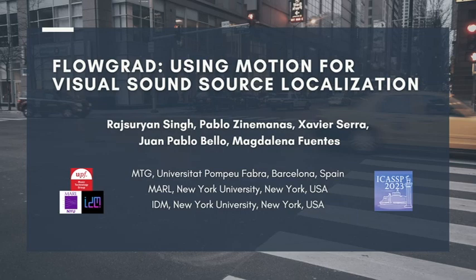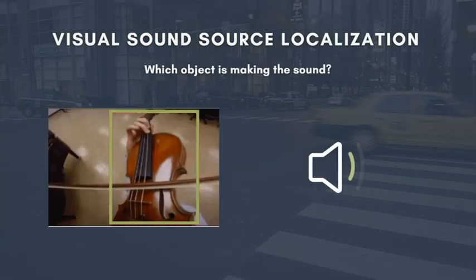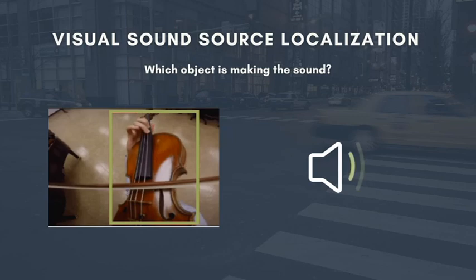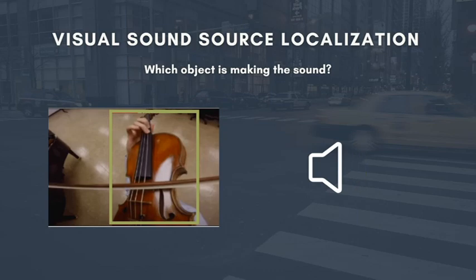What is visual sound source localization, one might wonder? If you have an image like this and the corresponding audio like this, it is to ask the question: which object in the image is making the sound? In this case, the unanimous consensus would be that it's the violin.